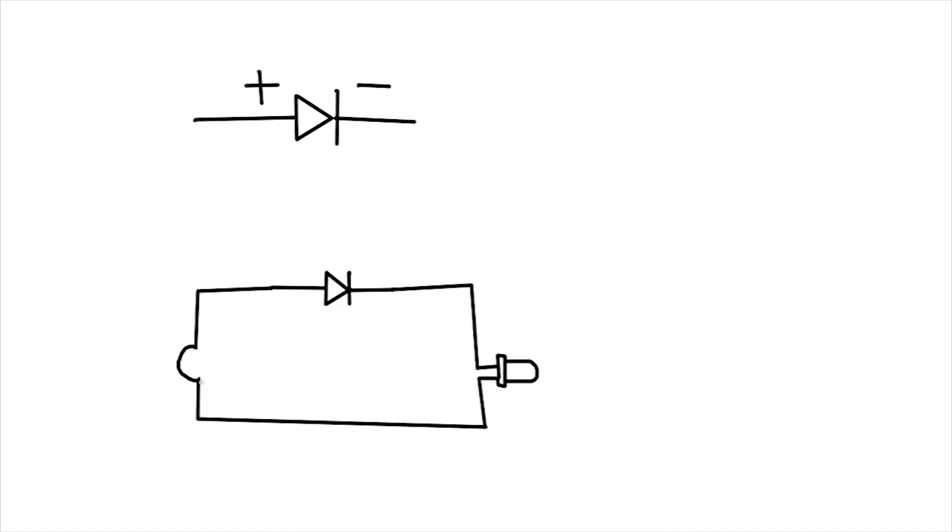Now since our source voltage is AC, let me just replace my battery with an AC source. Since AC stands for alternating current, this is how the voltage varies with respect to time. Now in our case, during the time interval of the positive half cycle, this diode is forward biased, meaning your LED will be glowing. But during the negative half of the cycle, this diode is reverse biased resulting in an open circuit here. Consequently, turning off this LED.